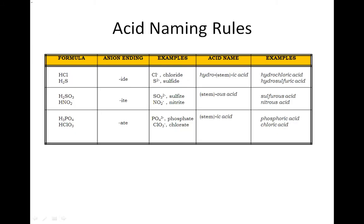Acid naming rules. What you need to write down is: ide becomes hydro stem ic acid. Ite becomes stem ous acid. Ate becomes stem ic acid. And we have to be able to pick out our stems. Phosphate becomes, the stem is phos. Chlorate, the stem is chlor. Nitrate, the stem is nitr. Sulfite, the stem is sulfur. Isn't that kind of different? So let's do some things to help you remember ite and us.